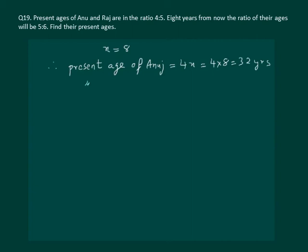Then present age of Raj is 5x. That means 5 into 8, which is equal to 40 years.